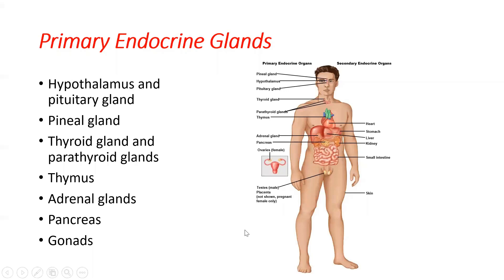Primary endocrine glands include the hypothalamus and the pituitary gland — these are the master endocrine glands, the chief endocrine glands. We've also got the pineal gland, a gland within the brain important in endocrine function and hormone secretion. The thyroid and parathyroid glands are closely associated; the parathyroids are embedded in the thyroid gland, and although they secrete different hormones, they form one connected structure.